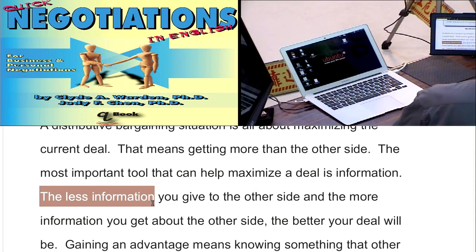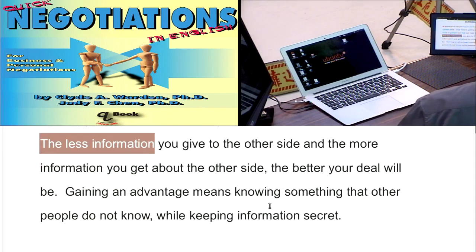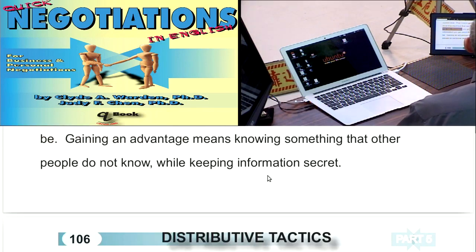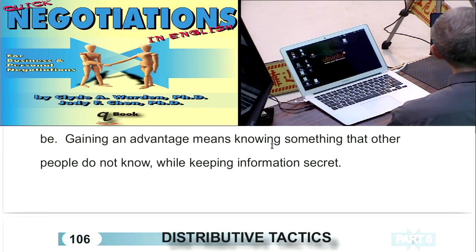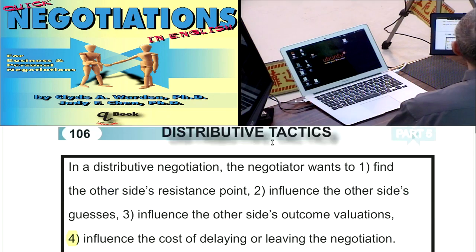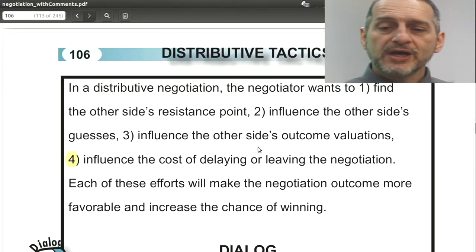Inside your team, you all need to agree on what information is secret and what information you're going to share. The information you share does not have to be true — it should be information that helps you win the negotiation and achieve your goal. So let's look at a few specific tactics for how we can do this.